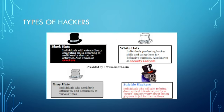And finally we have the fourth type, which many of you may not have heard of: suicide hackers. Suicide hackers are individuals who aim to bring down critical infrastructure for a cause, and they really don't care about the consequences. All they care about is completing the hack, destroying the system or stealing data, and they don't care if they get arrested. So that's basically the types of hackers.